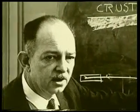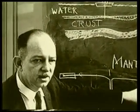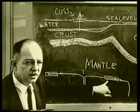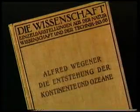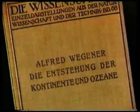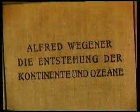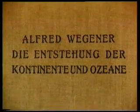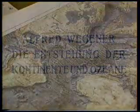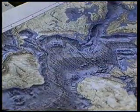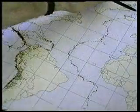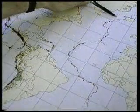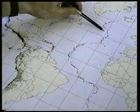Geologists understood that Wegener was right only in the 1980s, 50 years after his death. Discovered as a result of the geological research carried out at the beginning of the 20th century, this movement of the earth's crust is explained by scientists as follows.